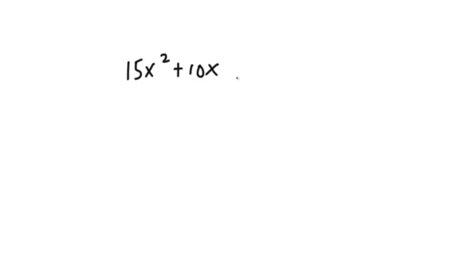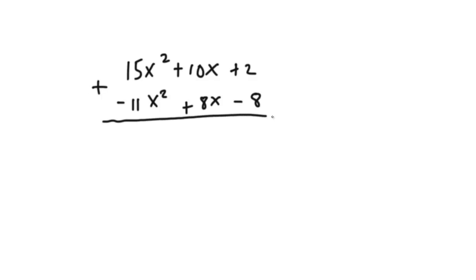Let's say you have these two polynomials: 15x squared plus 10x plus 2, and negative 11x squared plus 8x minus 8. We want to add them. What you want to do is line them up — the x squared with the x squared, the x with the x, and the constant with the other constant.